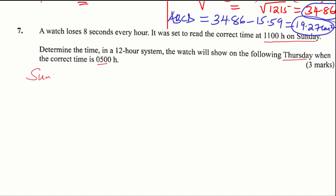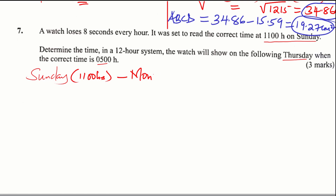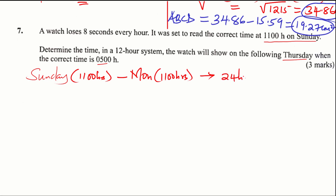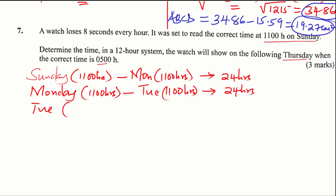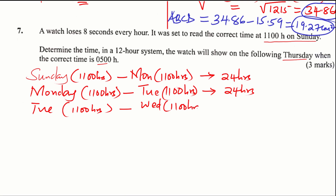From Sunday at 11:00 hours to Monday 11:00 hours, that is 24 hours — a full day. Then from Monday 11:00 hours to Tuesday 11:00 hours, that is another full day, 24 hours. Then from Tuesday 11:00 hours to Wednesday 11:00 hours, that is another full day, 24 hours.